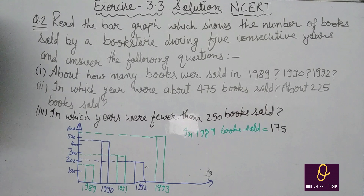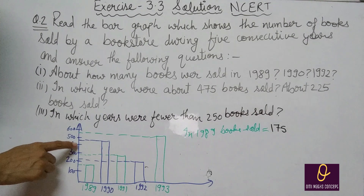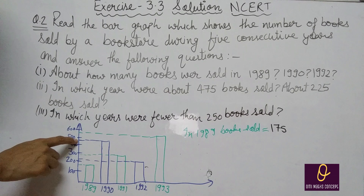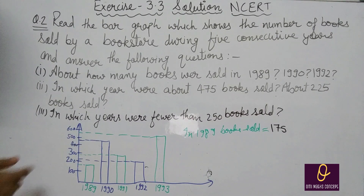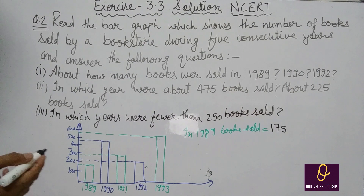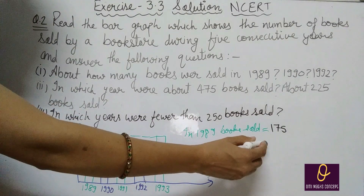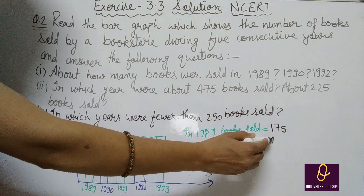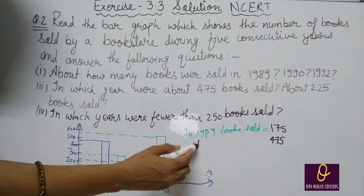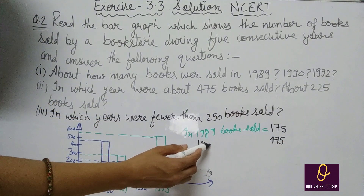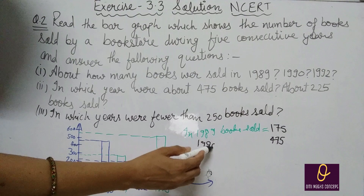1990 में अगर आप graph देखते हैं तो यह half से जादा है, और more than half से जादा है तो इसको आप 75 की range में लोगे. यह आपके पास 475 आएगा. यह 1990 के लिए है. Then 1992.